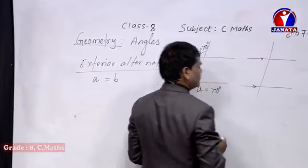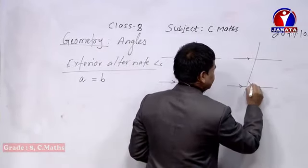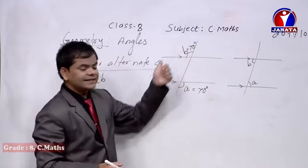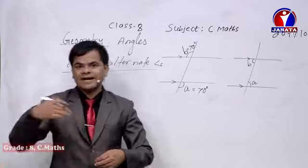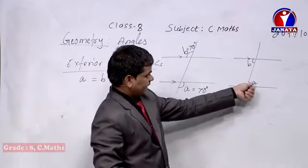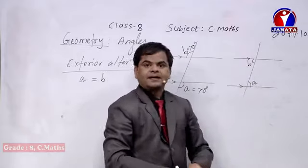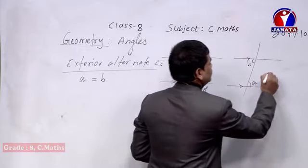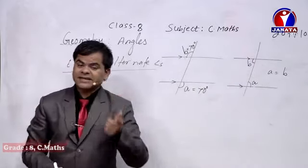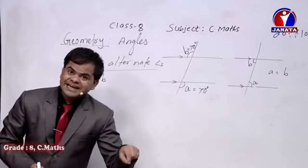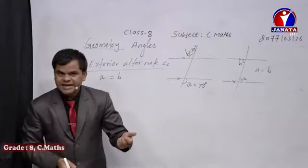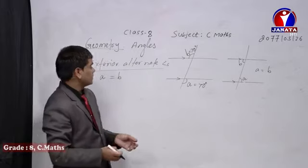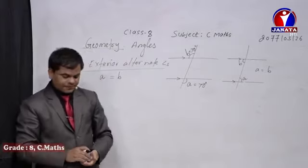For interior alternate angles, let's call them A and B — both are inside the parallel lines, that's why they are known as interior. For exterior alternate angles, both are outside. Alternate means one should be on the right-hand side and another on the left-hand side. So A is on the right, B is on the left — these are interior alternate angles, and their relation is they are equal to each other. Whether exterior or interior alternate angles, they are always equal.